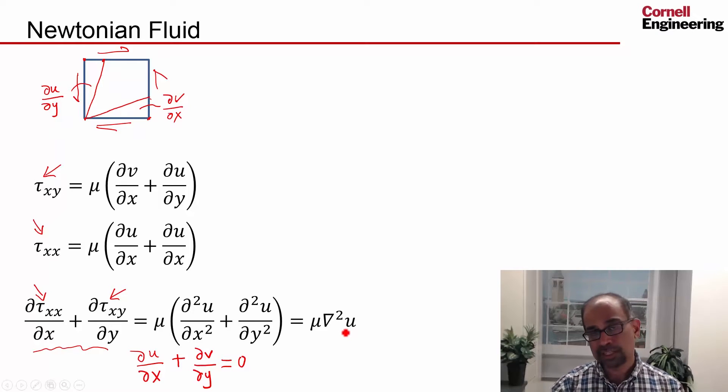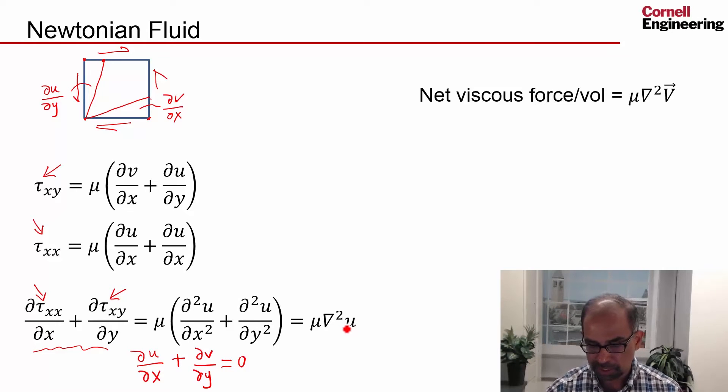And similarly, you will get the net viscous force in the y direction for a Newtonian fluid as mu del squared v, lowercase v. And if you put it together, you'll get the net viscous force per unit volume as mu del squared v, where v is the vector.